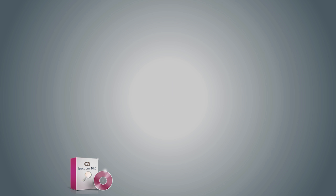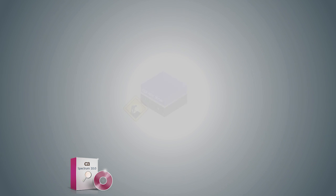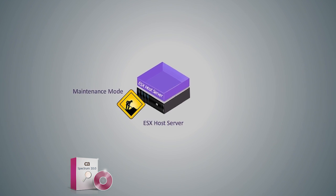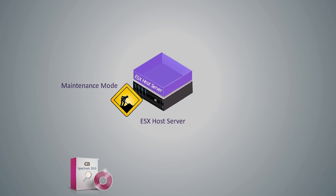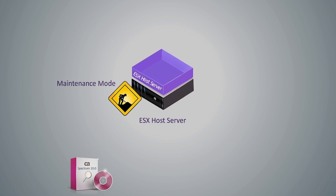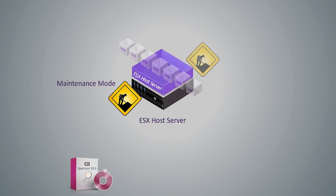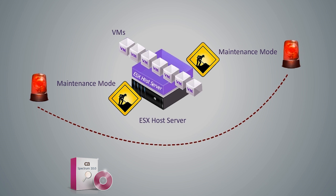First, he can use CA Spectrum 10 to schedule the maintenance mode of an ESX host. When an ESX host is placed in maintenance mode, all the VMs under the ESX host are automatically placed in maintenance mode. The maintenance alarms on VMs are correlated to the ESX host maintenance alarm.